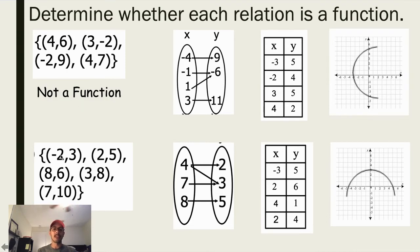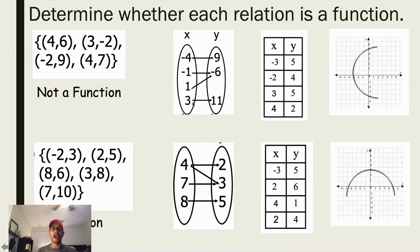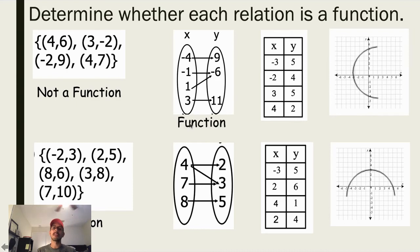When we look at the second set of ordered pairs, we have x values of negative 2, 2, 8, 3, and 7 — all different, so this would be considered a function. When we look at this mapping diagram, we're checking whether each domain is mapped to only one range, so each x should have only one arrow. Negative 4, negative 1, 1, and 3 each have one arrow going off of them, so this is a function.